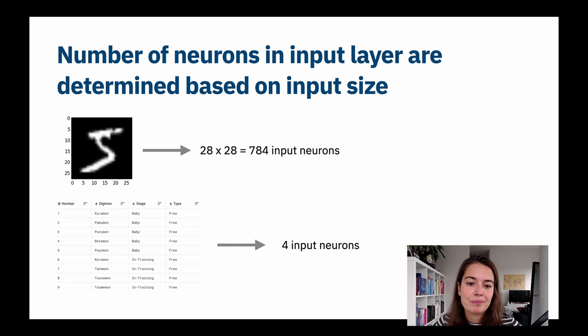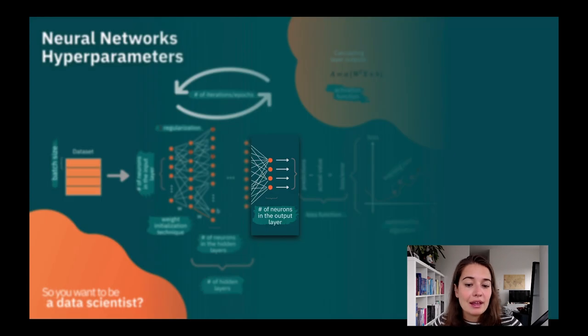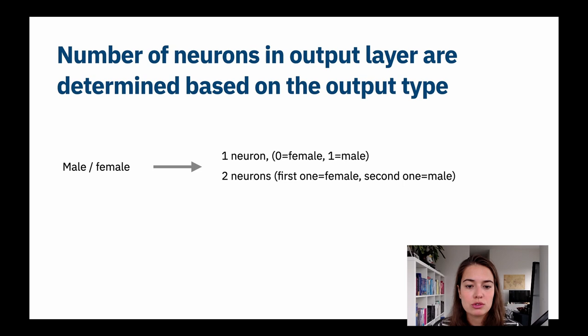Another thing that is determined by the data is the number of neurons in the output layer. Let's look at some examples. Let's say your prediction is whether someone is male or female. You can have one neuron, and if it's zero it's female, if it's one it's male, or vice versa.